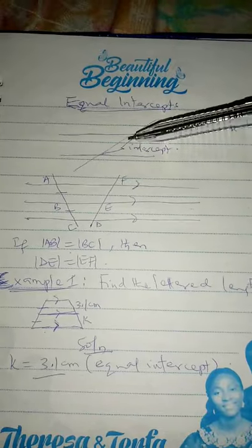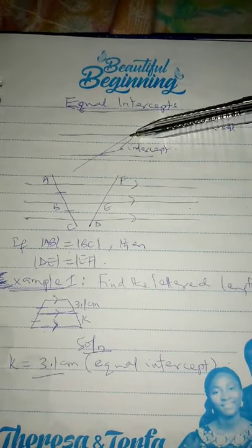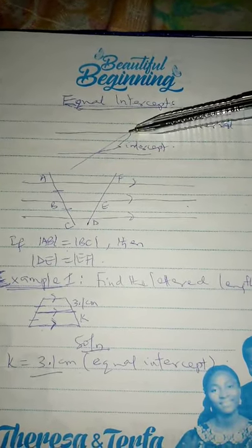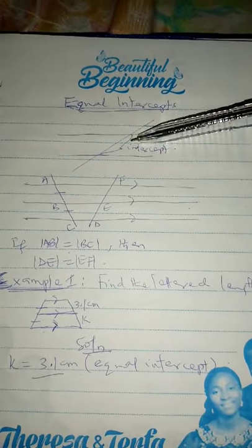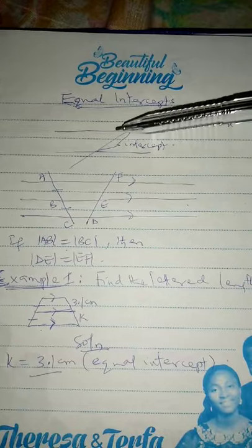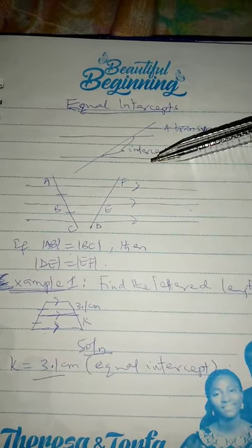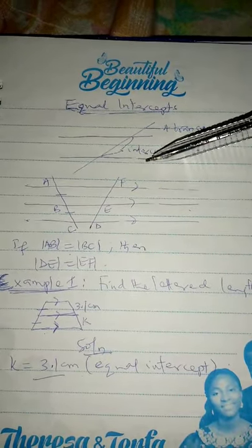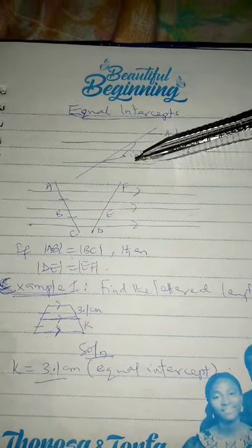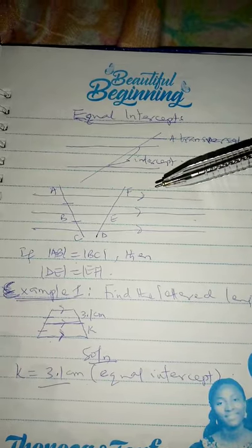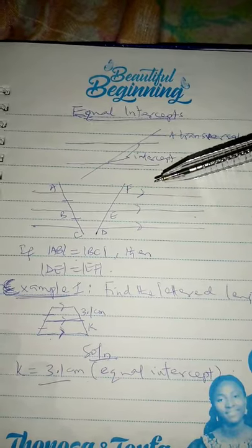So, this is our intercept. It will be a part on your transversal, and it will be cut off in between two lines.